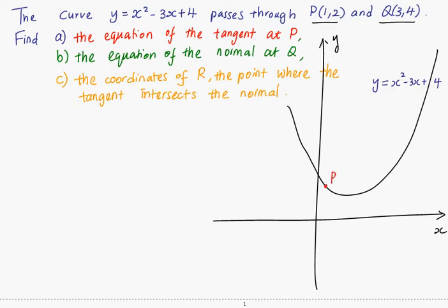This is the point P and this is the point Q. And you are asked to find the equation of the tangent to the curve at P. Which means that you are actually asked to find the equation of the tangent, that is the line in red. Equation of tangent.